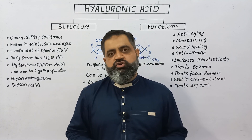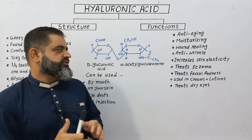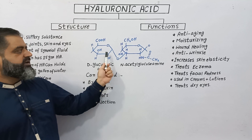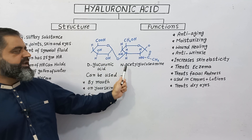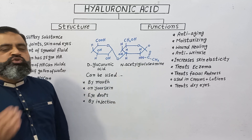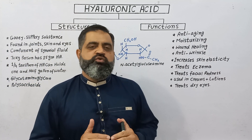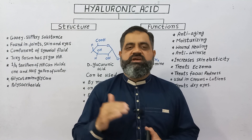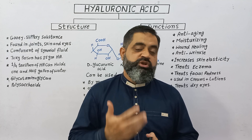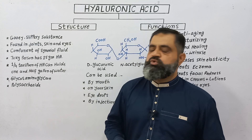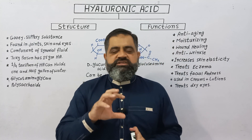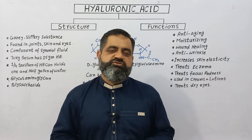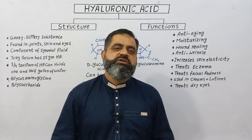If you look at the structure of HA, it is composed of two sugars. The first sugar, as you can see right over here, is glucuronic acid, which is bonded with another sugar, acetylglucosamine. Both of these join together to form a disaccharide. This disaccharide unit is repeated several times to make a molecule known as a polymer, and this molecule is known as glycosaminoglycan.